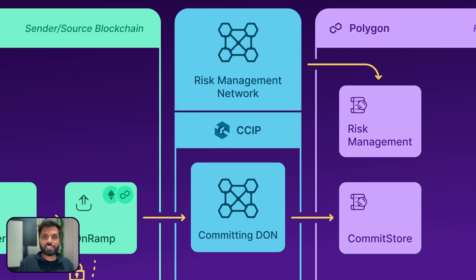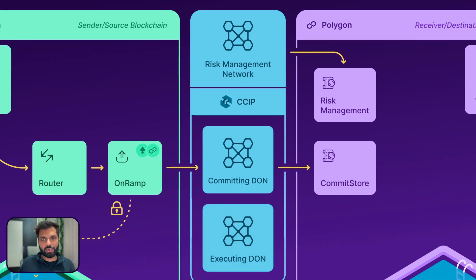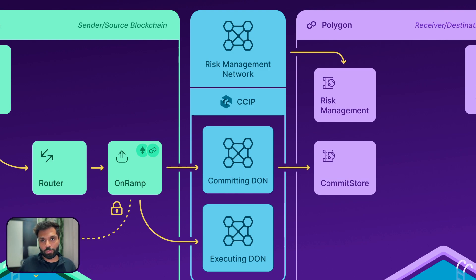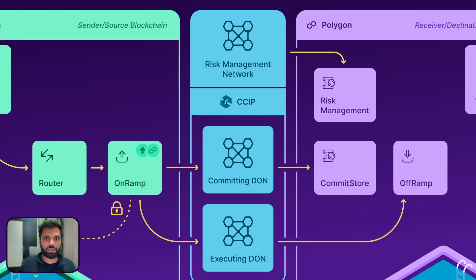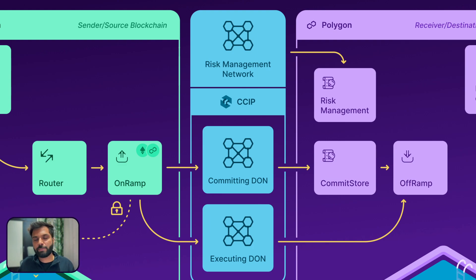In parallel, the Executing DON also keeps listening for the event emitted by the on-ramp smart contract and listens for the validation from the Risk Management Network for the Merkle root. Once it's validated, the Executing DON sends a Merkle proof to the off-ramp smart contract on the receiving chain, which then validates it against the Merkle root stored in the commit store as well as the risk management smart contract.